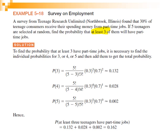"At least three" means greater than or equal to three, so we add up P(X=3) + P(X=4) + P(X=5), because we have only five teenagers selected at random and X can be at most five. We calculate each probability separately and add them all together.